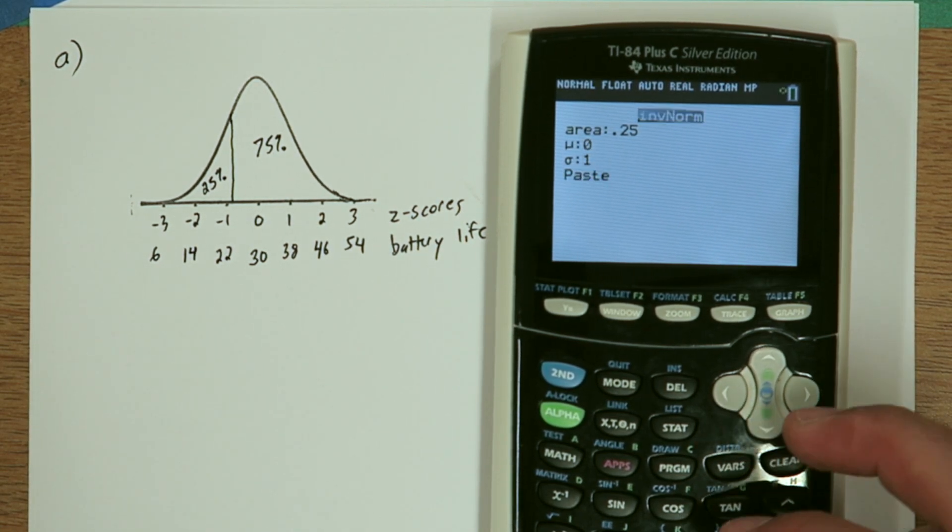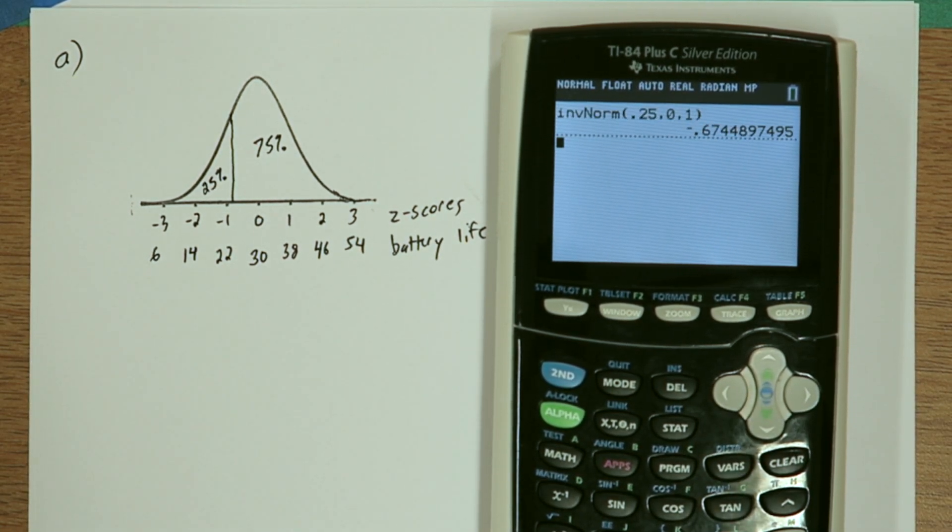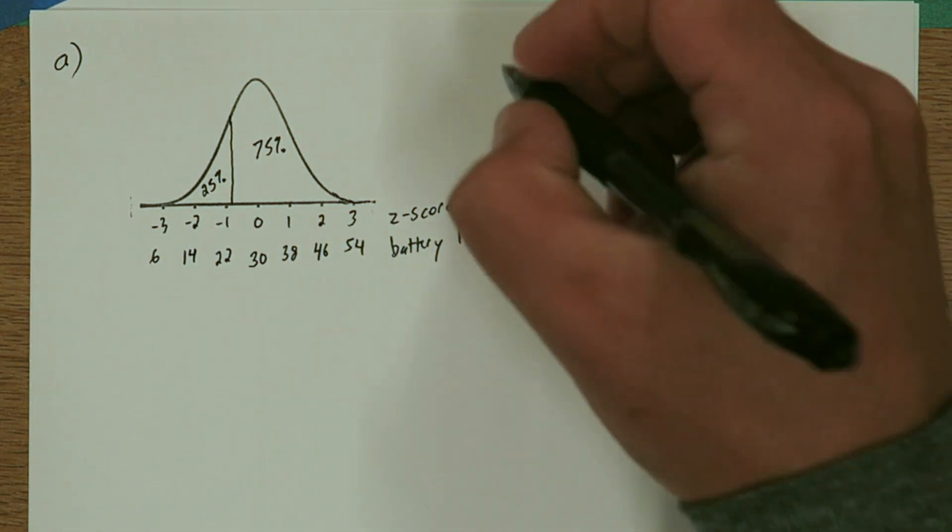And when I go to here, paste and enter, I get a Z score of negative 0.674.